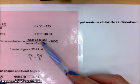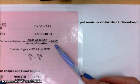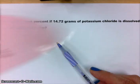So mass is in grams, so grams of solute over grams of solution times 100 percent, and that's how we're going to solve this problem.